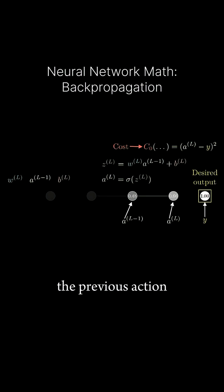The weight, the previous activation, and the bias all together are used to compute Z, which in turn lets us compute A, which finally, along with the constant Y, lets us compute the cost. And of course, AL-1 is influenced by its own weight and bias and such.